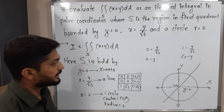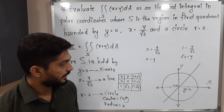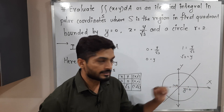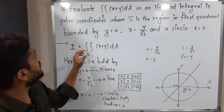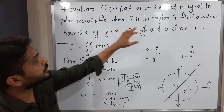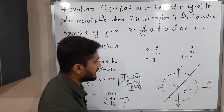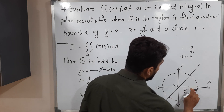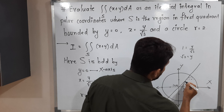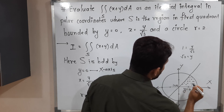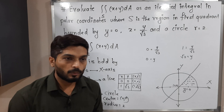The region is bounded by this circle, meaning the region lies inside the circle, bounded by the x-axis, bounded by this line, and they have also mentioned it is in the first quadrant. So this is the region of integration. Finally we have identified the region of integration. Now we have to convert the problem into polar form.